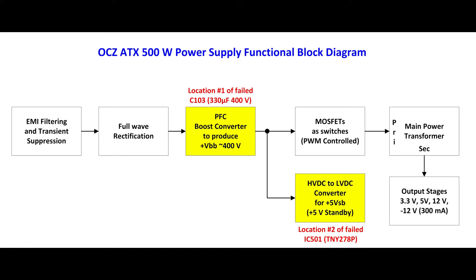To help aid in figuring out what went wrong with the power supply, I created a functional block diagram. The two blocks in yellow are the circuit sections where I had the failed components. The first yellow block contains the power factor correction and boost converter circuitry, while the second yellow block contains the high voltage DC to low voltage DC converter circuitry. This section is for creating the 5 volt standby circuitry for the power supply.